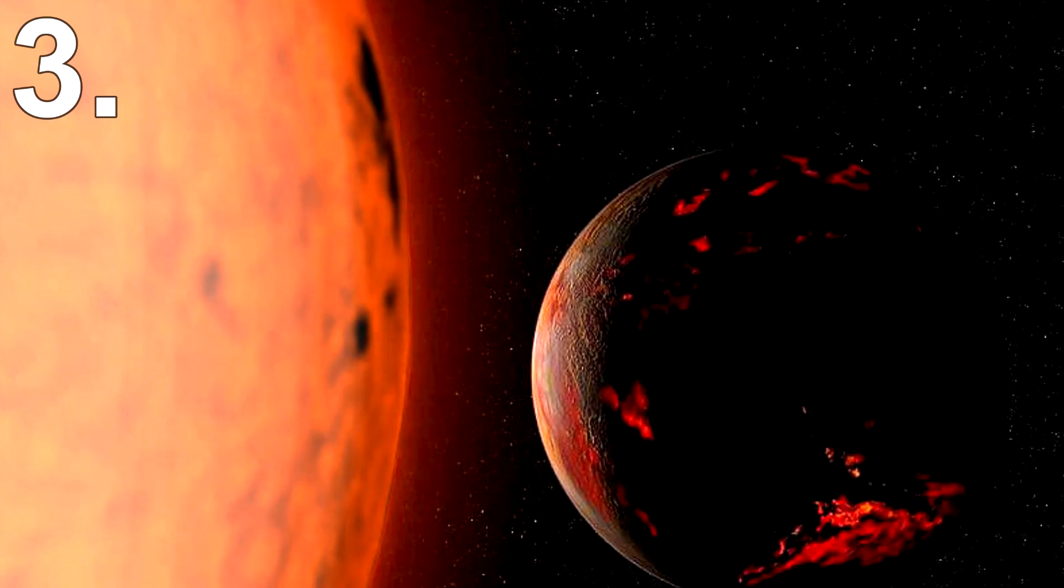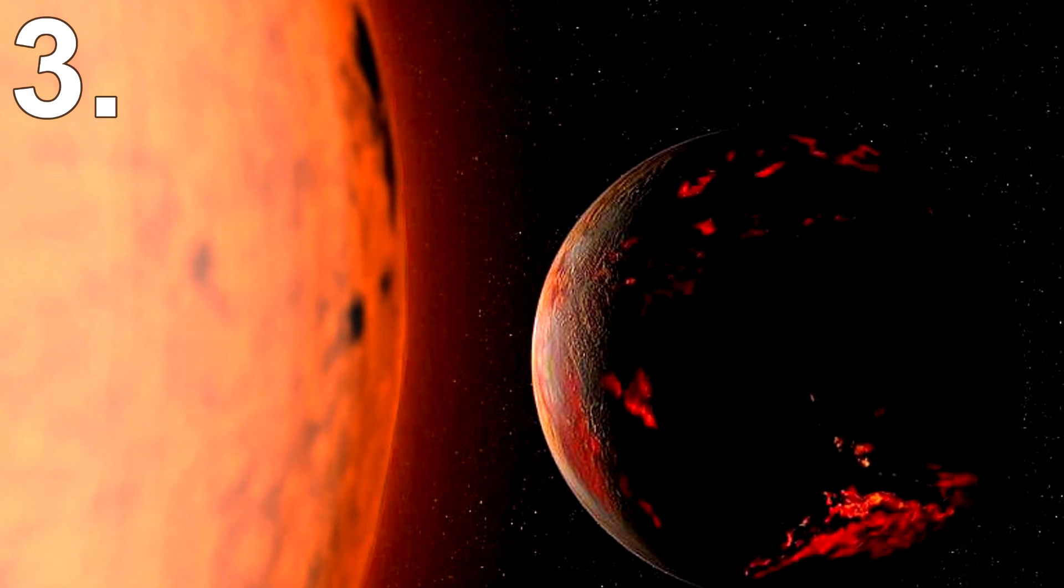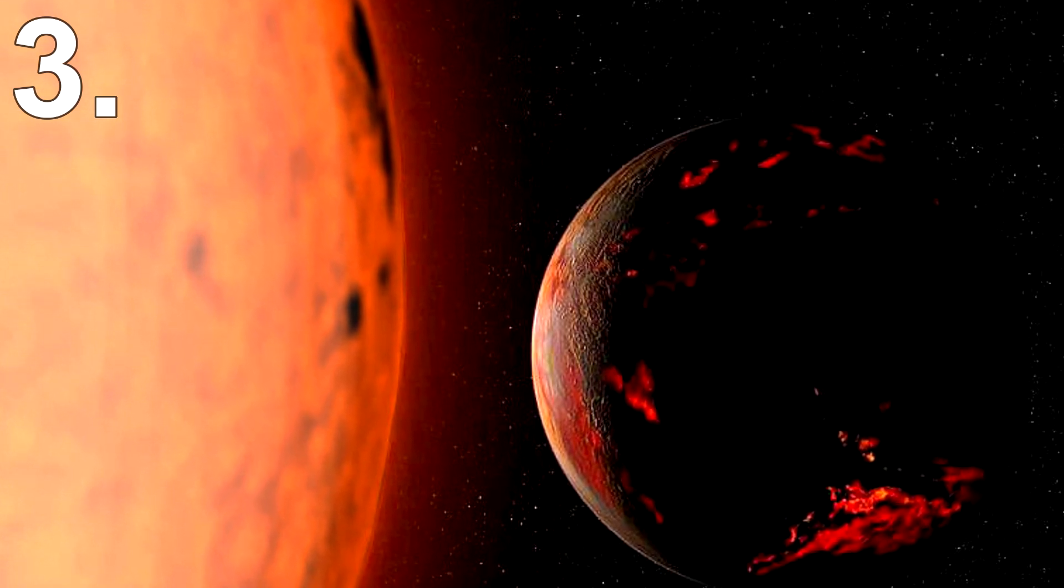When the sun is in its red giant phase you'd think its massive size would burn our planet to a crisp. While this is a possibility we can't say for sure. We do believe Mercury and Venus will be consumed by the sun but Earth may just make it out.